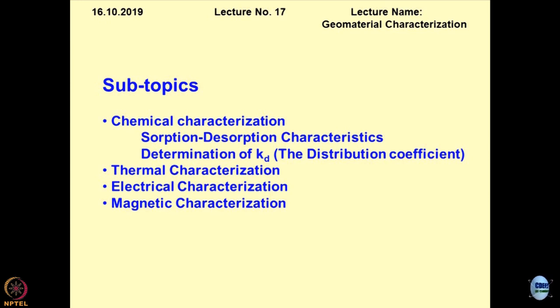Today's discussion will revolve around the mechanisms of sorption-desorption and how to determine the KD parameter. If you remember from the previous lecture, when we were discussing the one-dimensional ADE, I pointed out that unless you know the KD parameter, you cannot get the retardation coefficient R, and you cannot solve the equation that gives you the concentration of contaminant with respect to distance and time. So this is where KD becomes very, very important.